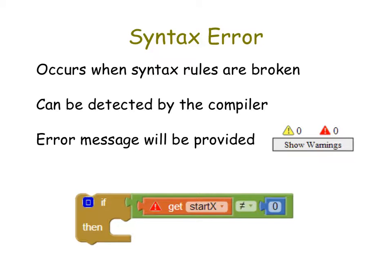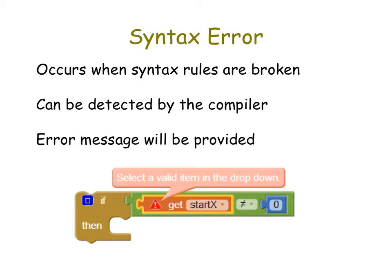When syntax errors occur, App Inventor can pick them out because it knows how things are supposed to be written and structured. You will get errors that show up on the screen. For example, this code right here shows a little error. You can also find this in the bottom corner, which tells you how many errors and warnings you have. You can click on it and it will show you what the error is — in this case, it says 'select a valid item in the item drop-down,' meaning start X was never declared or doesn't fit in this particular procedure.